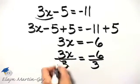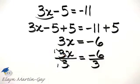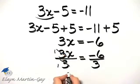Why? Because notice the 3's divide out, and I have 1X over 1, which is simply X.